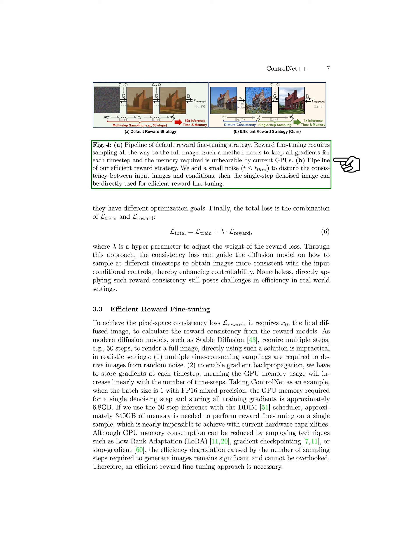For instance, using ControlNet with a batch size of 1 and FP16 mixed precision, the GPU memory needed for a single denoising step is about 6.8 GB. If we apply a 50-step inference, approximately 340 GB of memory is required, which is not feasible with current hardware. Techniques like low-rank adaptation and gradient checkpointing can reduce GPU memory consumption, but efficiency is still impacted by the number of sampling steps. To address this, we propose an efficient one-step reward strategy.